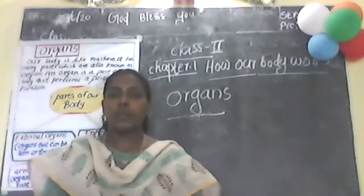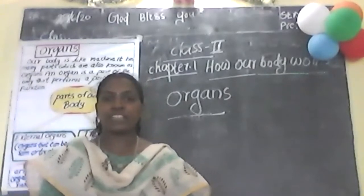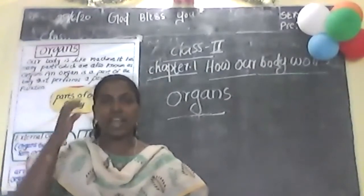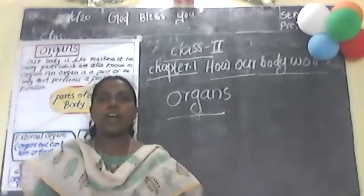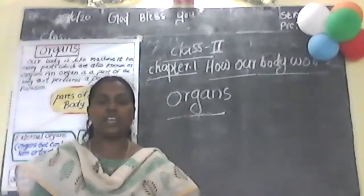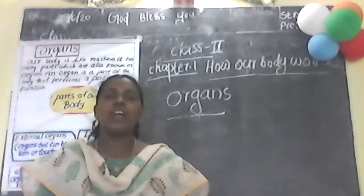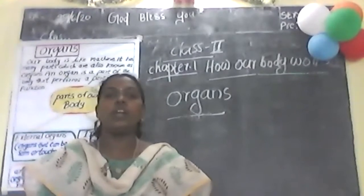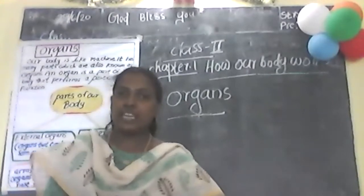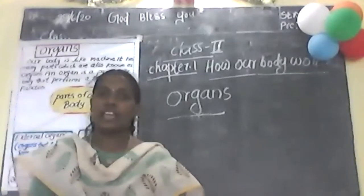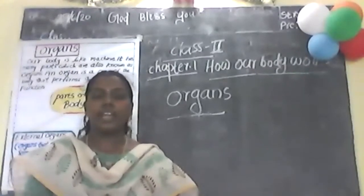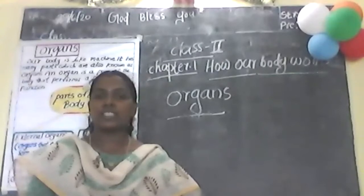How many external organs are in our body? All our external organs include: head, forehead, eyebrow, eyes, lips, mouth, teeth, chin, ears, legs. Our nose, tongue, teeth, cheek, chin, and ears are also our external organs. Study external organs, all of you.